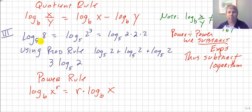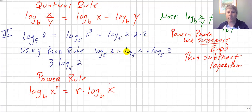We have log base 5 of 8, which is the same as log base 5 of 2 cubed — and 2 cubed is 2 times 2 times 2. So we have log base 5 of 2 times 2 times 2, similar to splitting log base 2 of 32 into 8 times 4. Using our product rule, that would be log base 5 of 2 plus log base 5 of 2 plus log base 5 of 2. We simply add our logarithms, giving us 3 times log base 5 of 2. So log base 5 of 2 cubed equals 3 times log base 5 of 2.